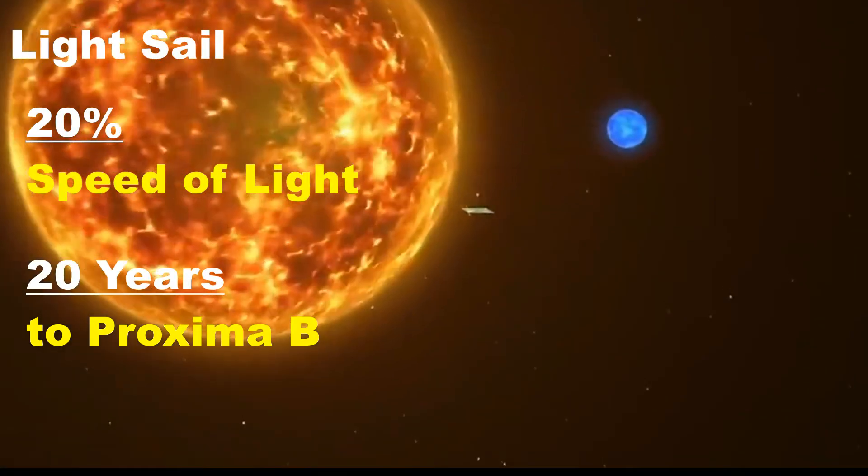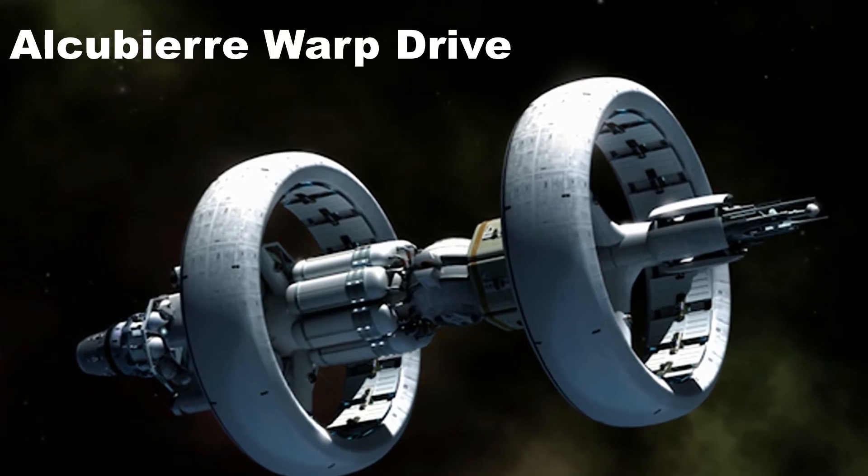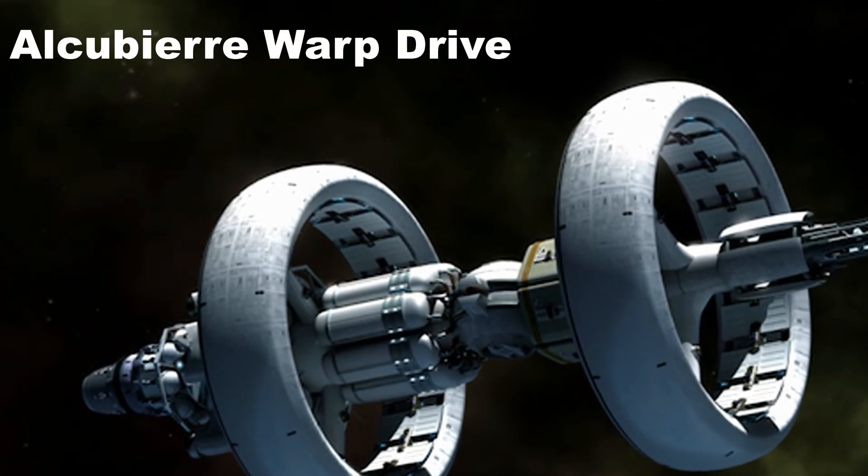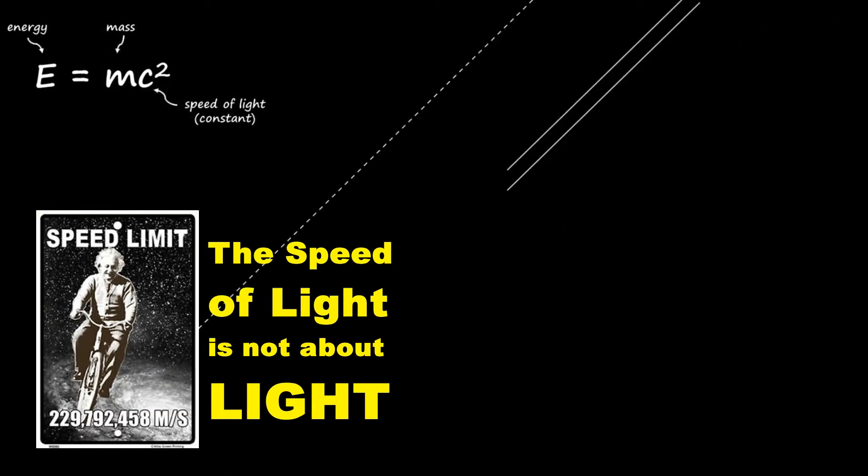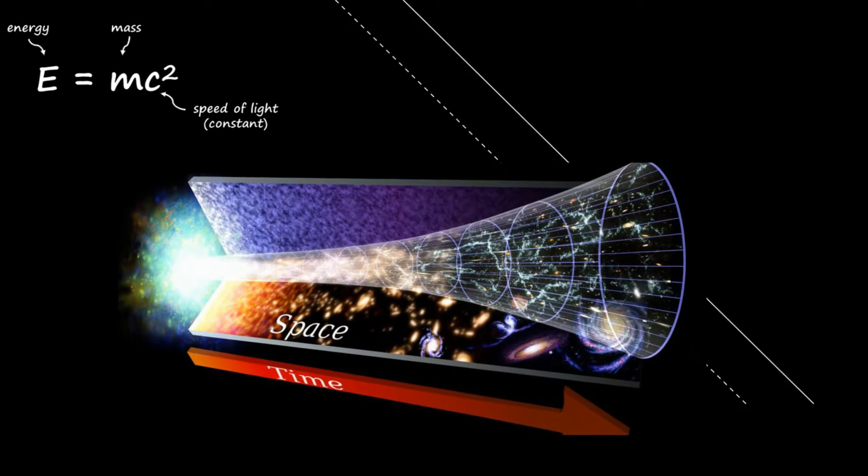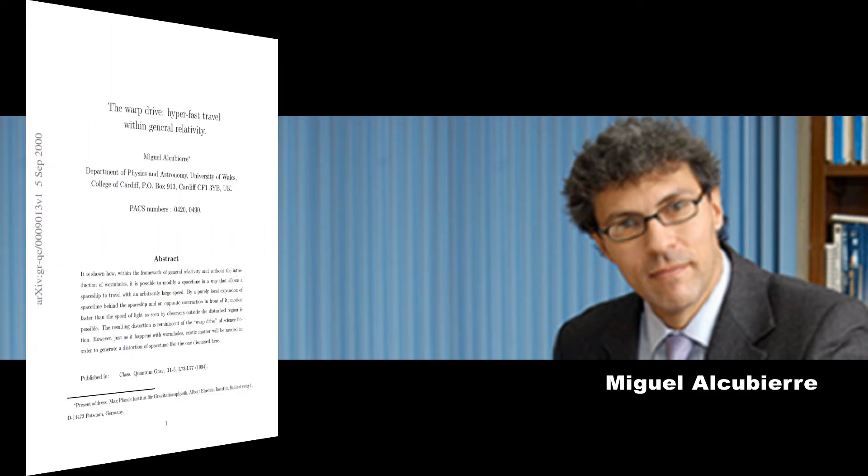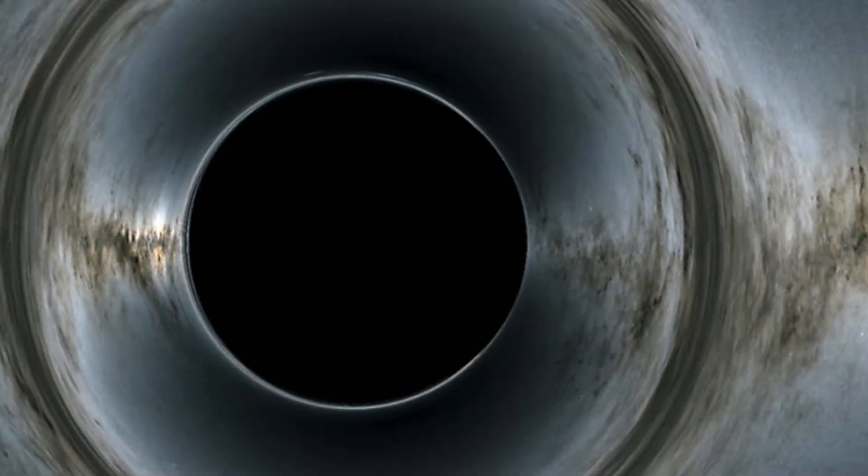Now let's get to interesting tech of all, the Alcubierre warp drive. If this warp drive is made possible, we could travel faster than speed of light. But is it really possible? We all are familiar with the Albert Einstein's theory of relativity, which proved it's not possible to move faster than speed of light in space. But the equation can be tricked to achieve speed faster than light without breaking laws of physics. Miguel Alcubierre in 1994 made such observation and proposed a drive which can use intense gravitational forces to move faster than speed of light.